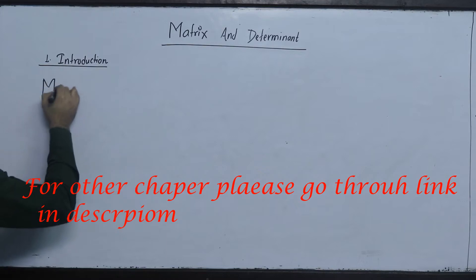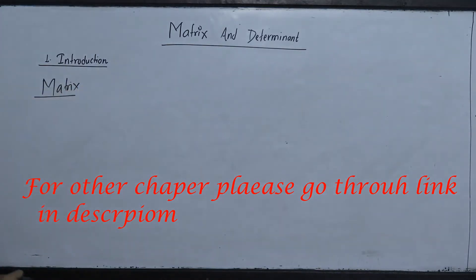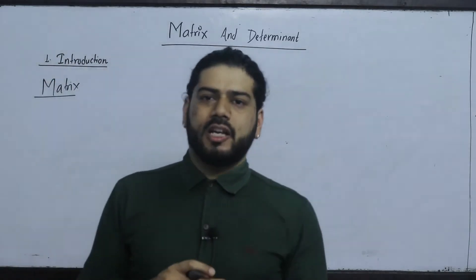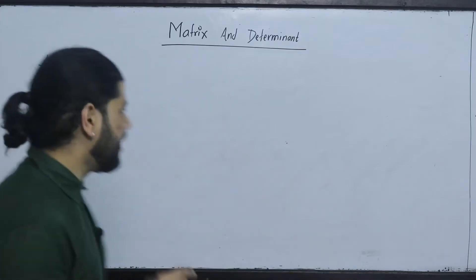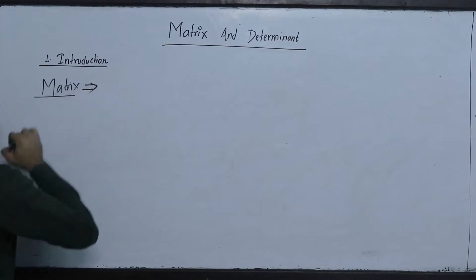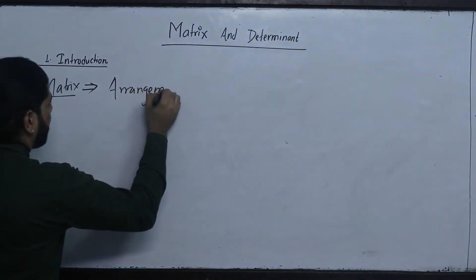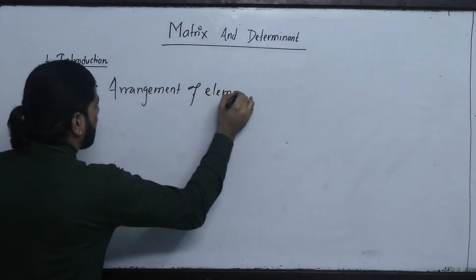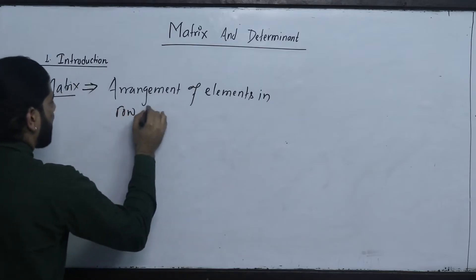What is the matrix? What is the defined matrix? The matrix is an arrangement of elements in row and column form.